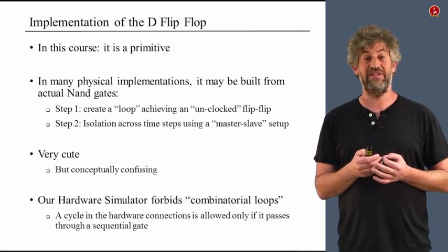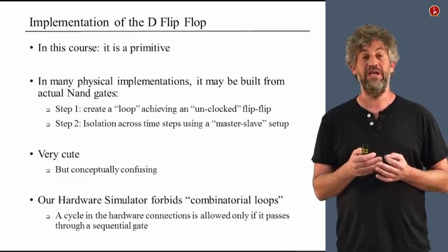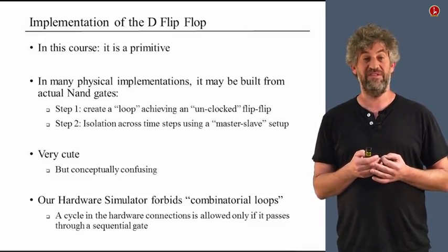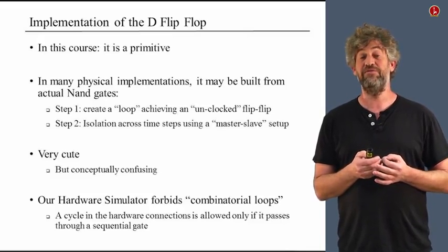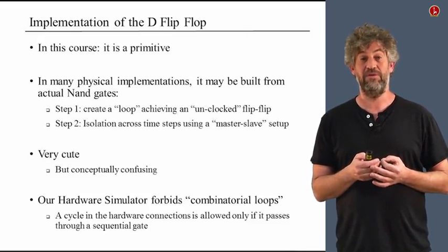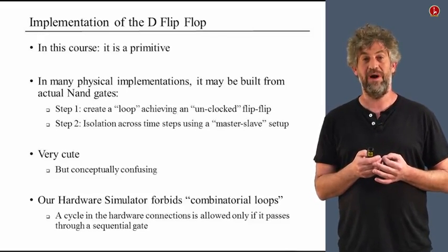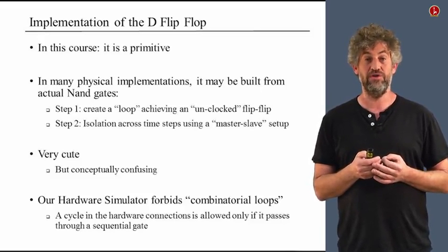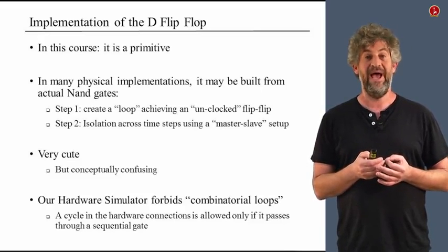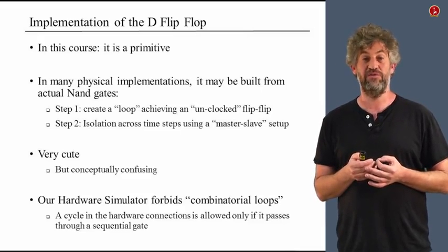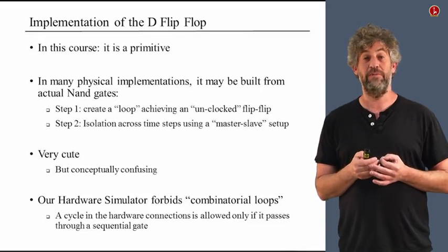This kind of logic usually has two steps: first, the cycle that allows it to remember information, and second, logic that provides isolation between subsequent time units. We will not describe how this is done in this course, even though it's extremely elegant and beautiful, because we think it's confusing. We believe it's completely worthwhile to keep separate in your head the combinatorial logic — which happens instantaneously — and the sequential logic, which we treat as its own primitive block rather than something constructed from combinatorial components.